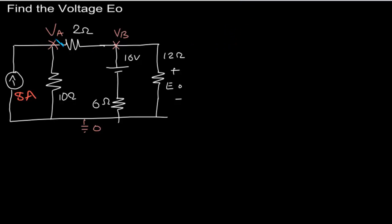First we will write the equation at this node. That means by convention we will assume that the current entering the junction be negative. So this current will be minus 8, plus we will assume that the current leaving a particular node be positive.